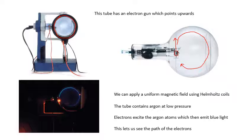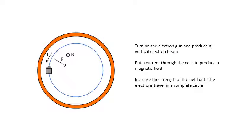We turn on the electron gun and get a vertical beam. Then we put a current through the coils to produce a magnetic field. We turn up the current until we get the electrons going around in a circle. The force on them is centripetal.